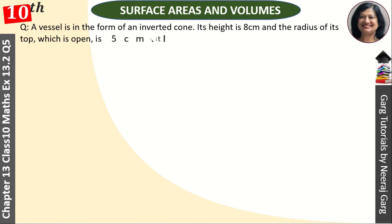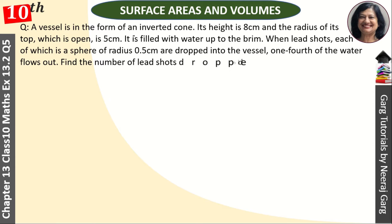Hi, this is Neeraj Gark and you are watching Surface Area and Volumes. A vessel is in the form of an inverted cone. Its height is 8 centimeters and the radius of its top, which is open, is 5 centimeters. It is filled with water up to the brim. When lead shots, each of which is a sphere of radius 0.5 centimeters, are dropped into the vessel, one-fourth of the water flows out. Find the number of lead shots dropped in the vessel.